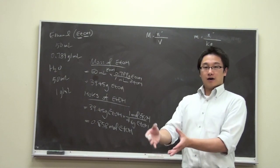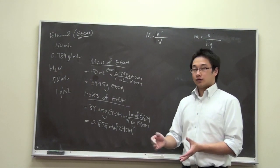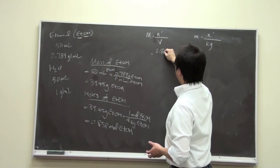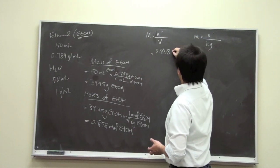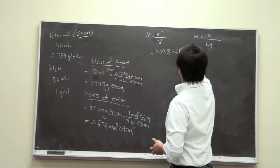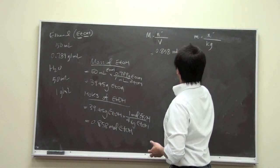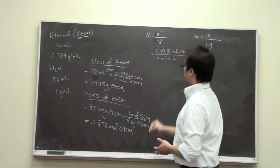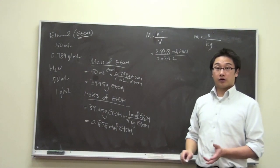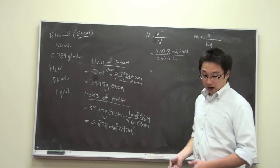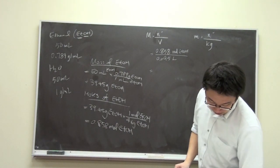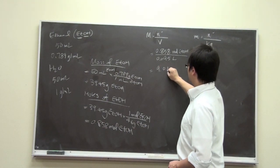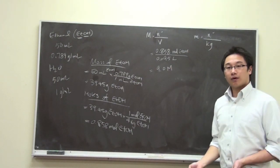So we're going to use the given volume, which is 95 ml, to find out the molarity. So it is 0.858 moles of ethanol over total volume is 0.095 liter. We have to convert from milliliter to liter. And if you use a calculator, you will find out that the molarity is 9.0 molar.